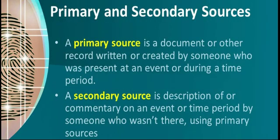Primary and secondary sources: A primary source is a document or other record written or created by someone who was present at an event or during a time period. A secondary source is a description of or commentary on an event or time period by someone who wasn't there, using primary sources.